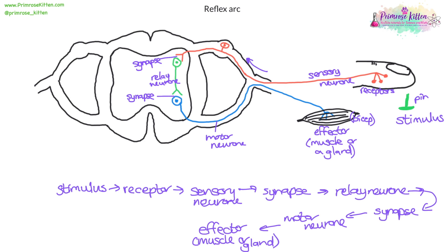Now there are another couple of labels you need to know about on this diagram. This over here is the spinal cord. The spinal cord is made up of two parts: the first part is the white matter, and the second part is called the gray matter. The gray matter is generally where all the nuclei are — in the middle here you'll see a nucleus for the motor neuron and a nucleus for the relay neuron. The white matter is the bit on the outside. This bit over here, where the sensory neuron nucleus is, is called the dorsal root ganglion.